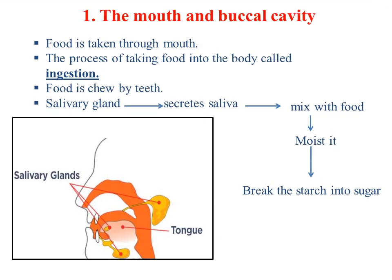First, starting with the mouth and buccal cavity: food is taken into the body through the mouth, and the process of taking food into the body is called ingestion. We chew the food with the teeth and break it down mechanically into small pieces. The chewed food is mixed with saliva, which is secreted from the salivary glands. Saliva moistens the food and breaks down starch into sugar.